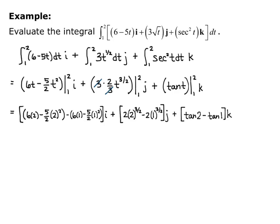Remember, that's f of b minus f of a when doing definite integrals. The i component simplifies to negative 3/2 i. The j component simplifies to 2 to the 5/2 minus 2. And the k component simplifies to tangent of 2 minus tangent of 1.